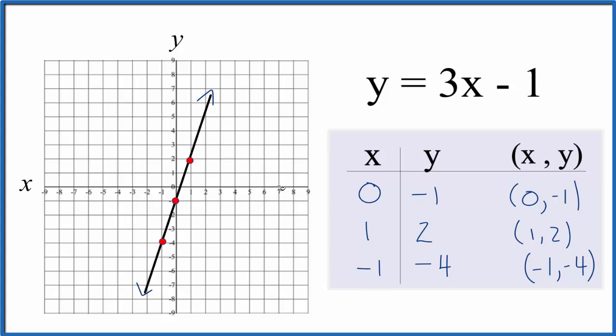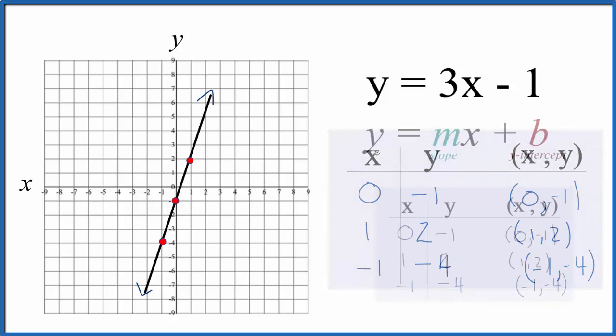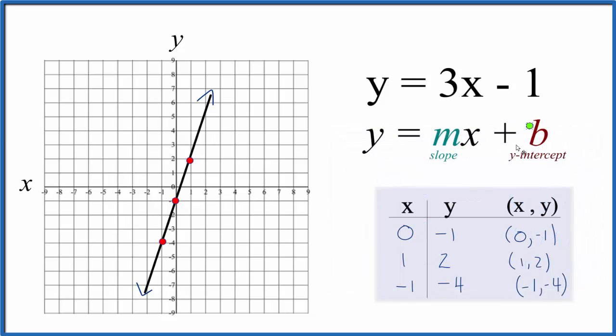So now we can check our work with the slope-intercept formula, y equals mx plus b. We have the y-intercept, that's b, that's on the y-axis here, where the line's going to go through the y-axis, and it says negative 1. So we'll go down on the y-axis to negative 1, and that's our y-intercept. So we have that first point there.